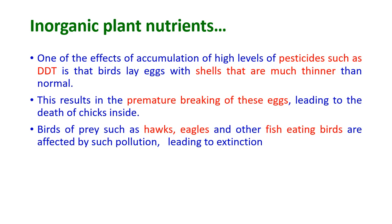For example, one effect of accumulation of high levels of pesticides such as DDT is that birds affected by DDT lay eggs with shells that are much thinner than normal. Due to the thinness of the eggshell, it leads to premature breaking of the eggs, causing death of the chicks inside. Birds of prey such as hawks, eagles and other fish-eating birds are affected by such pollution, leading to the extinction of those species.